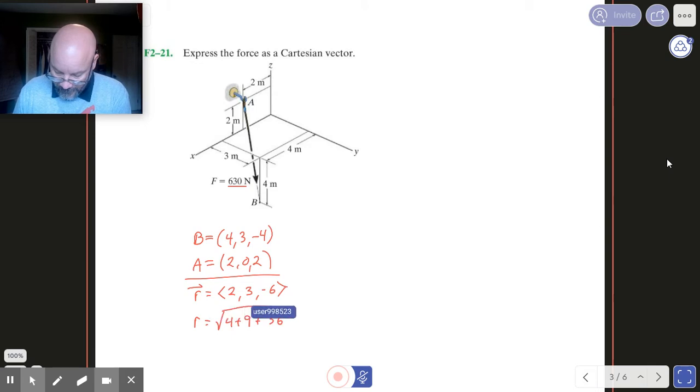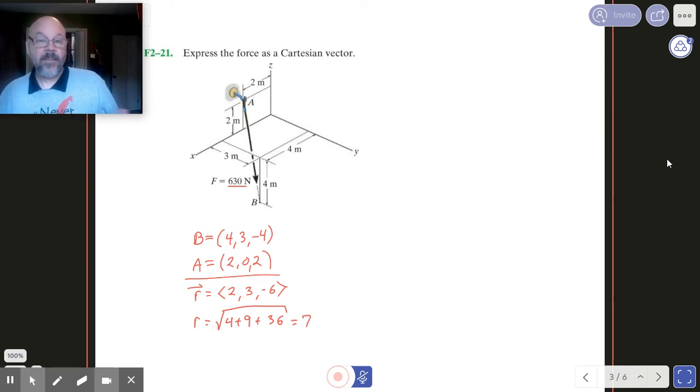I think that's right. Yeah, that's right there. And so that turns out to be 7. So that's a magnitude of 7. We need a vector with a magnitude of 630. So how are we going to come up with that?